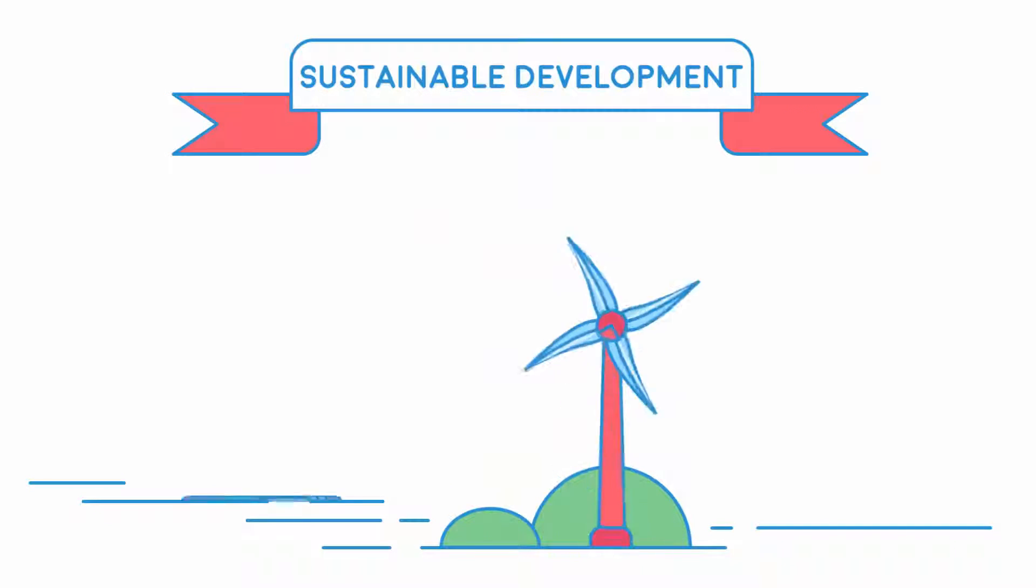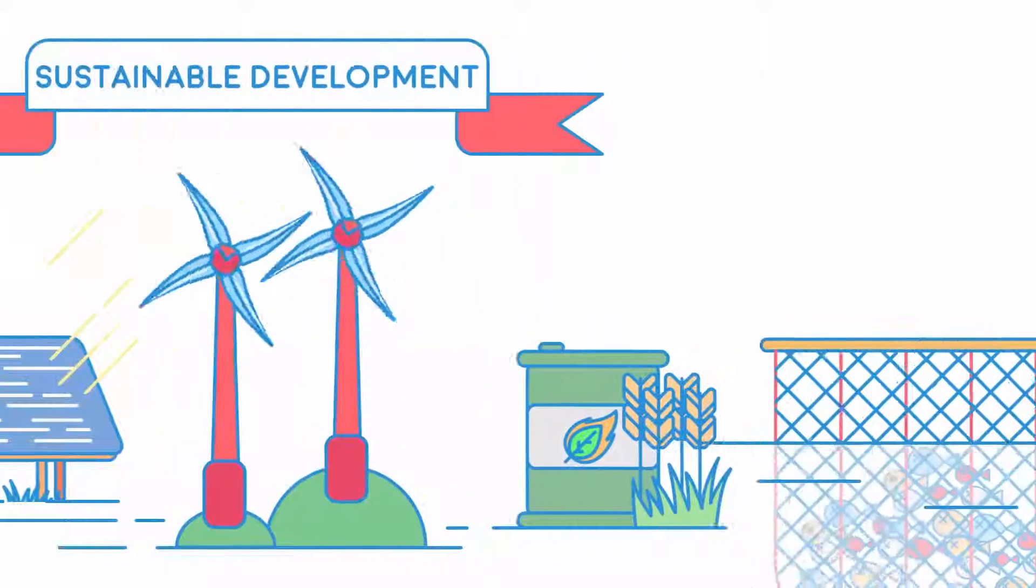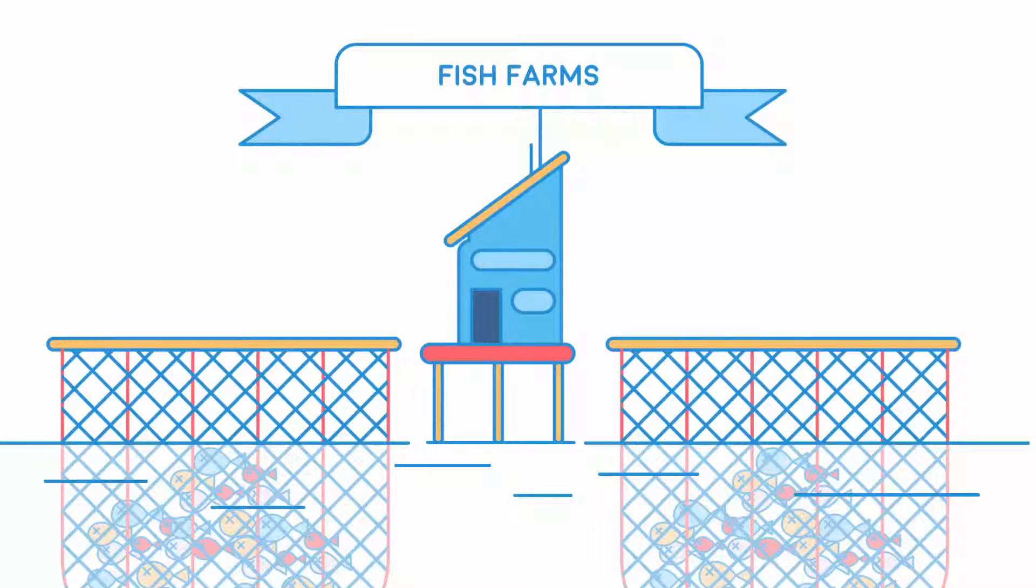So in this video we have covered what sustainable development is and some examples, including how to solve the problem of overfishing.